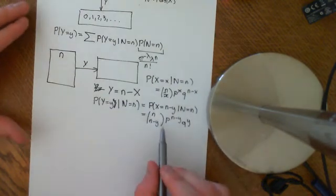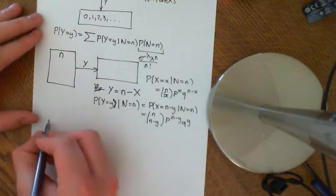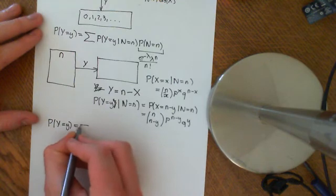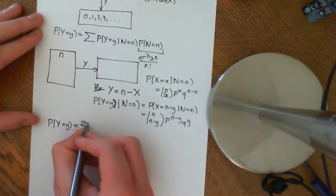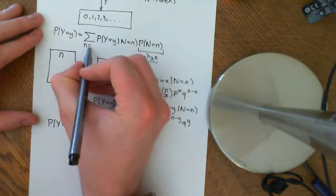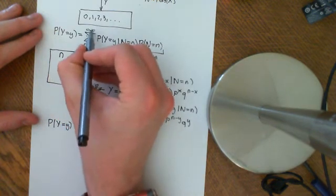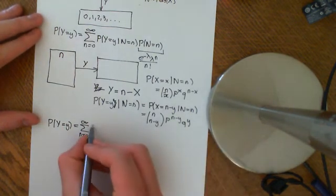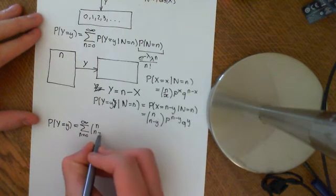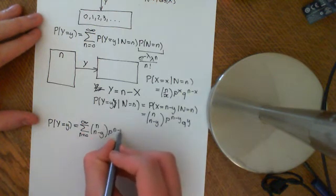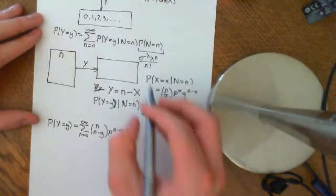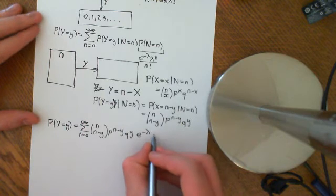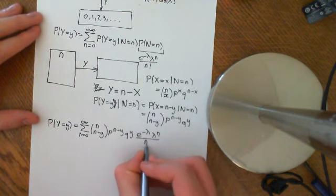There we have our conditional PMF, and we can now substitute it into the formula. We get that the probability that big Y is equal to some little y is equal to the sum over N from zero to infinity — summing over all values of little n that the chicken can lay — times the conditional PMF: N choose N minus Y, P to the N minus Y, Q to the Y, times the probability that N equals little n, which is e to the negative lambda, lambda to the N, over N factorial.